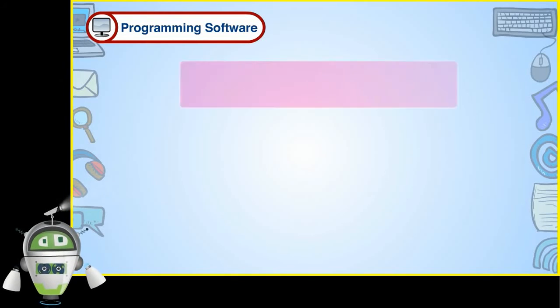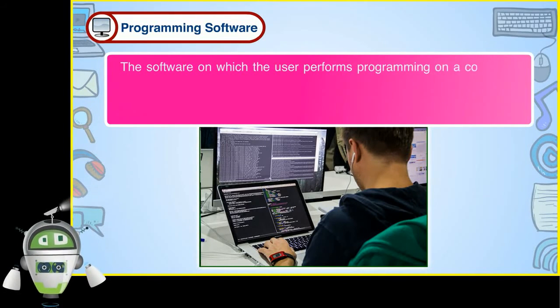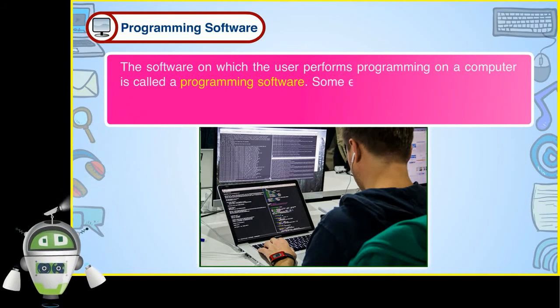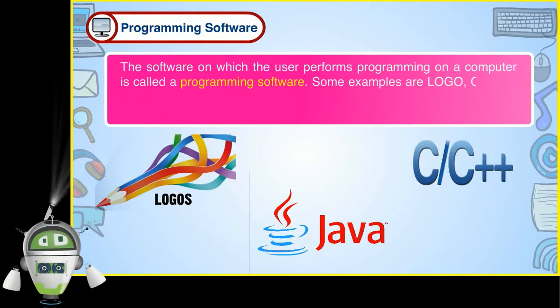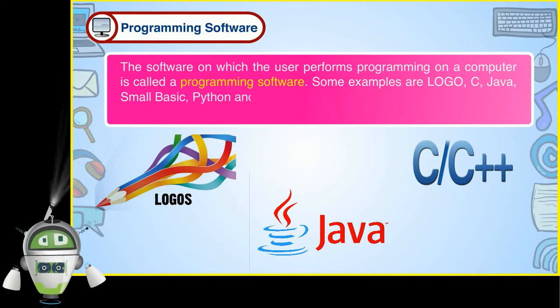Programming software: The software on which the user performs programming on a computer is called a programming software. Some examples are Logo, C, Java, Small Basic, Python and C++.